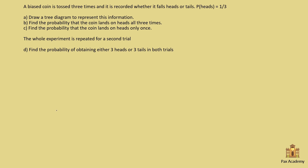So let's draw the tree diagram. A coin has two different outcomes — it can either be heads or tails. In this case, it tells us that the probability of heads is one-third. Normally, an unbiased coin would be half-half. But because this coin is biased, the probability of heads is one-third. So we write one-third there.